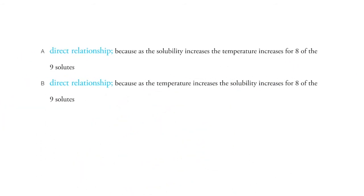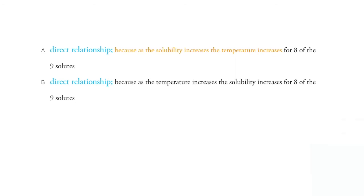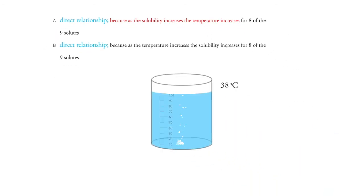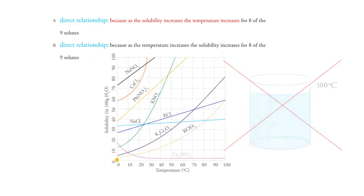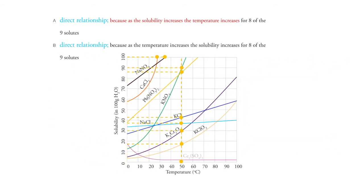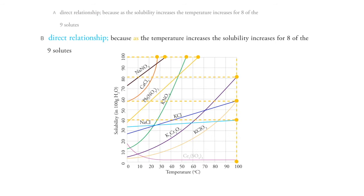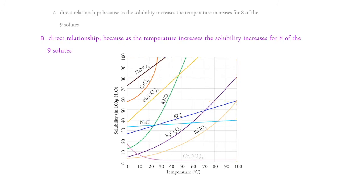That leaves A and B as possibilities. A says it's a direct relationship, which is true, but then it says because as the solubility increases, the temperature increases — that's not true. It's not true that if we add more salt, the temperature goes up. It's true that if we increase the temperature, we can add more salt. So B is a better answer because it says as the temperature increases, the solubility increases. Generally, a change in the x-axis results in a change in the y-axis.